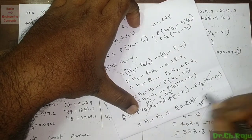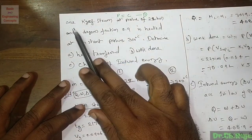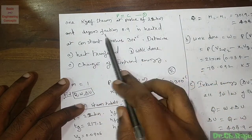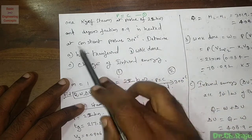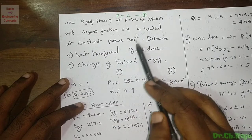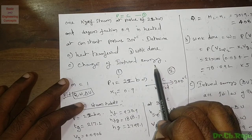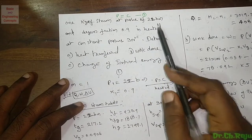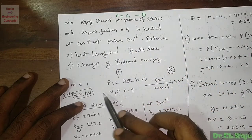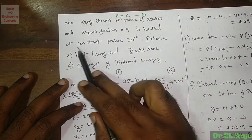Now moving to the problem: 1 kg of steam at a pressure of 22 bar and dryness fraction 0.9 is heated at constant pressure up to 300°C. Determine the heat transfer, work done, and change in internal energy. The initial condition of the steam is wet steam at 22 bar with dryness fraction 0.9.